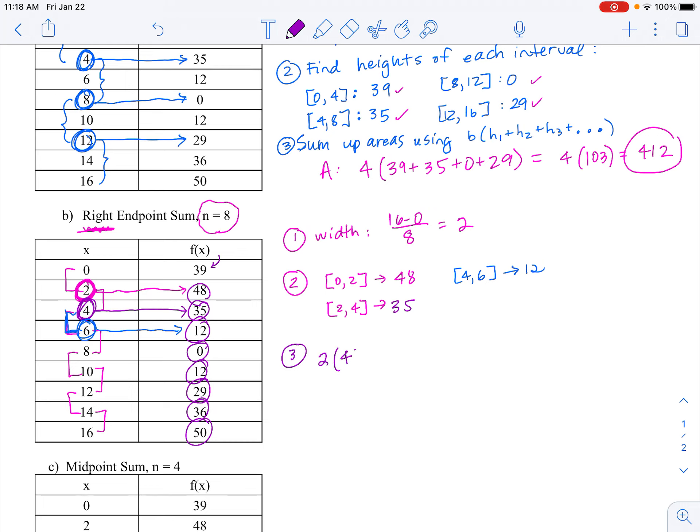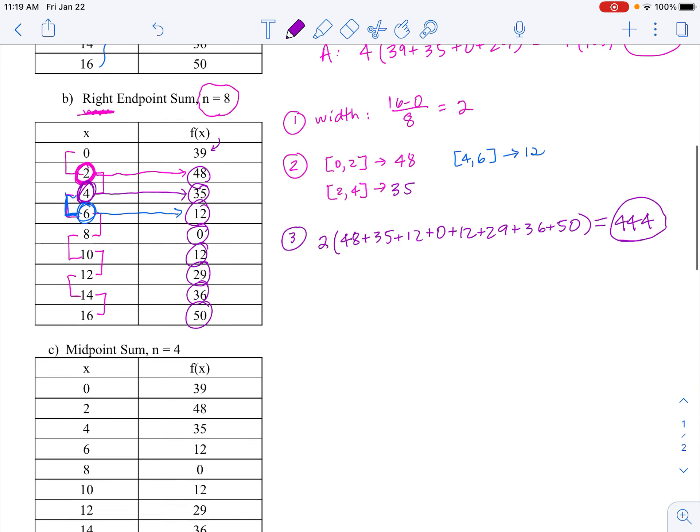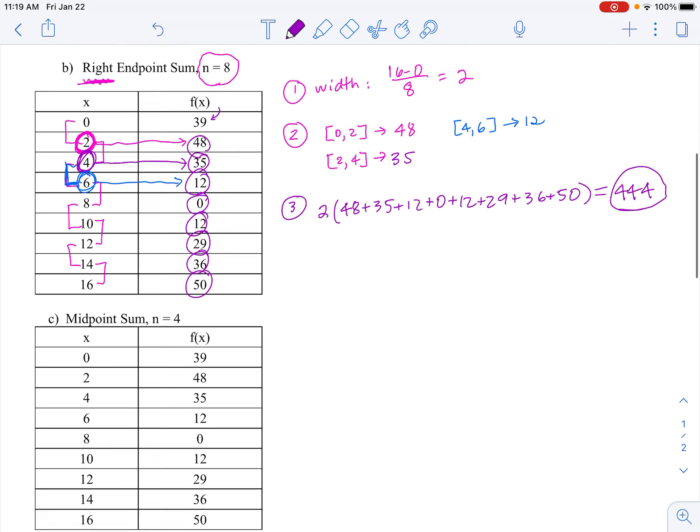So our overall width we know is 2, and then I'm going to sum up 48 plus 35 plus 12 plus 0 plus 12 plus 29 plus 36 plus 50. And I think we get 444 for that total. So you can see the left endpoint is 412, the right endpoint is 444.